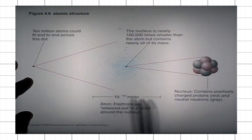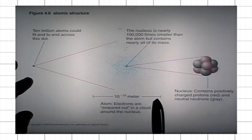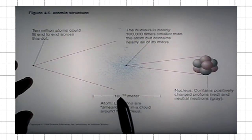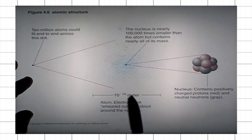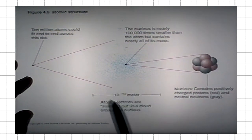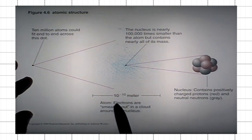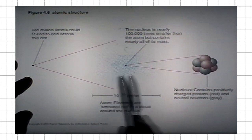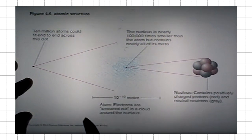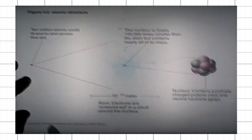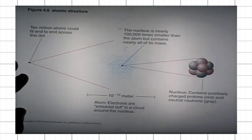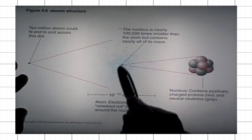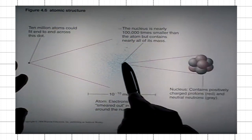Here is the scale of an atom. The diameter of a typical atom is 10 to the minus 10 meters. We introduced the concept of a nanometer, which is 10 to the minus 9 meters. An atom is about one-tenth of a nanometer in size.